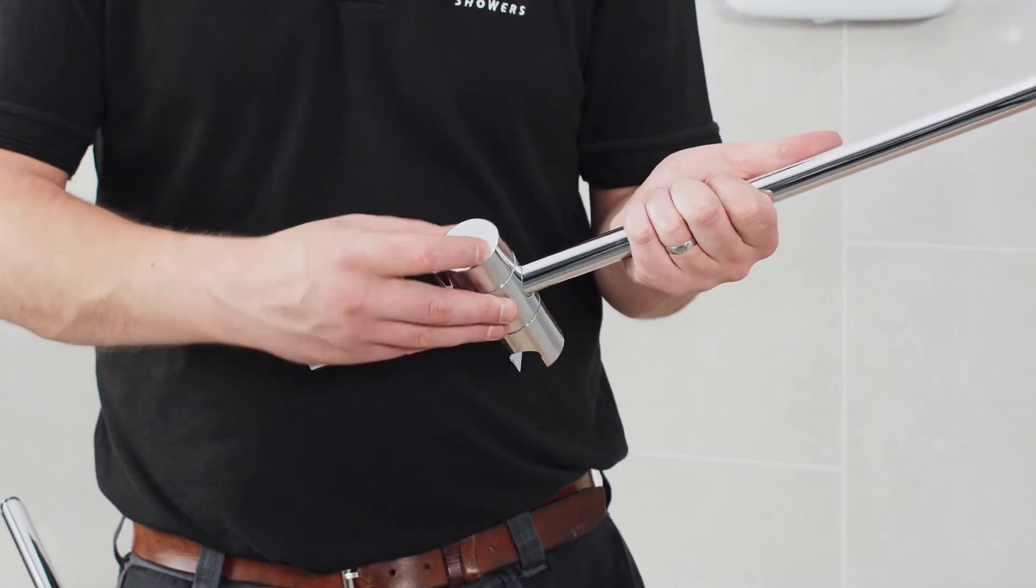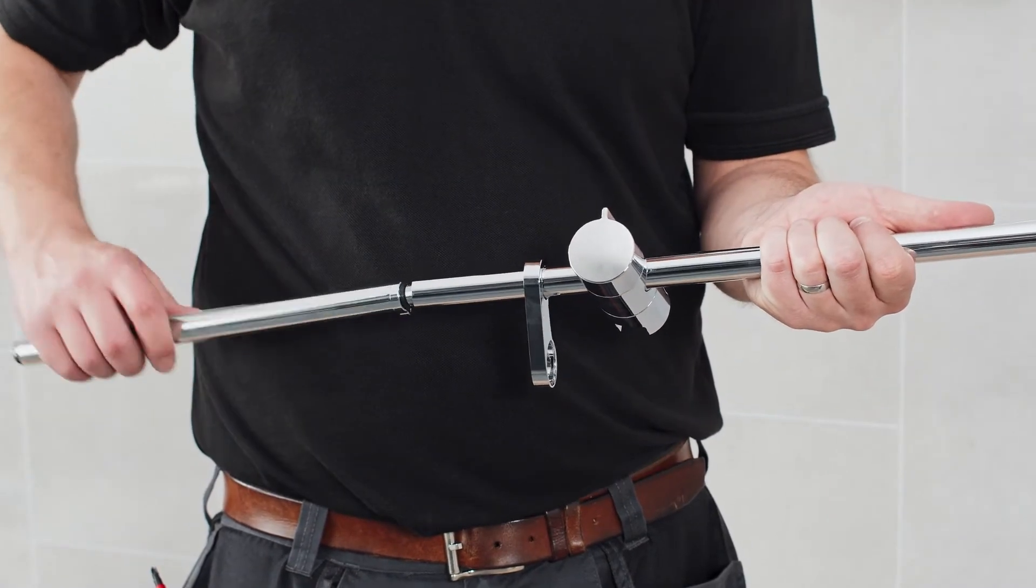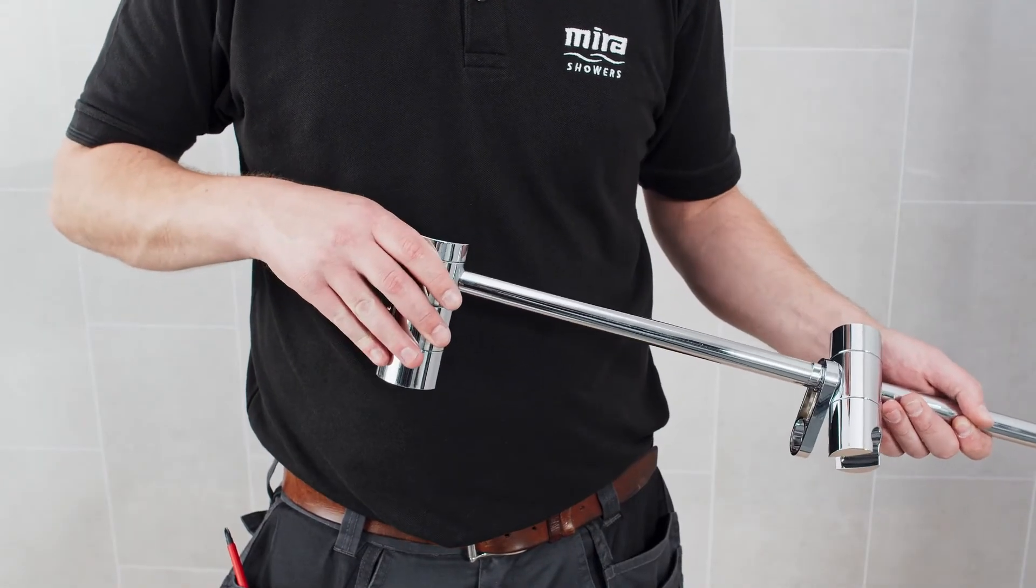Before installing the diverter kit, it's useful to pre-assemble this and to identify a suitable height and location for fixing. Be sure to include the clamp brackets and holes retaining ring when doing so.